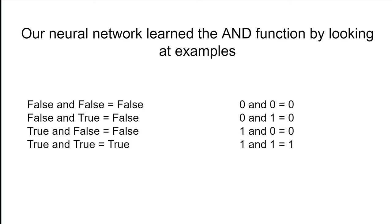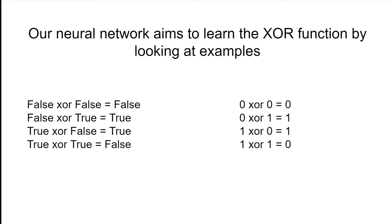The function we had our neural network learn last time was the AND function. This time, we'll learn the exclusive OR function, also called the XOR function. The XOR function is true when exactly one of the inputs is true, as outlined below.